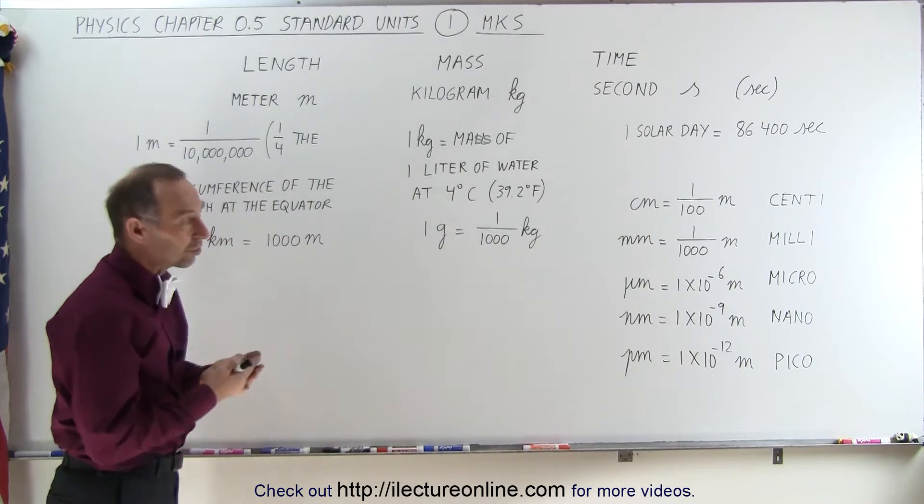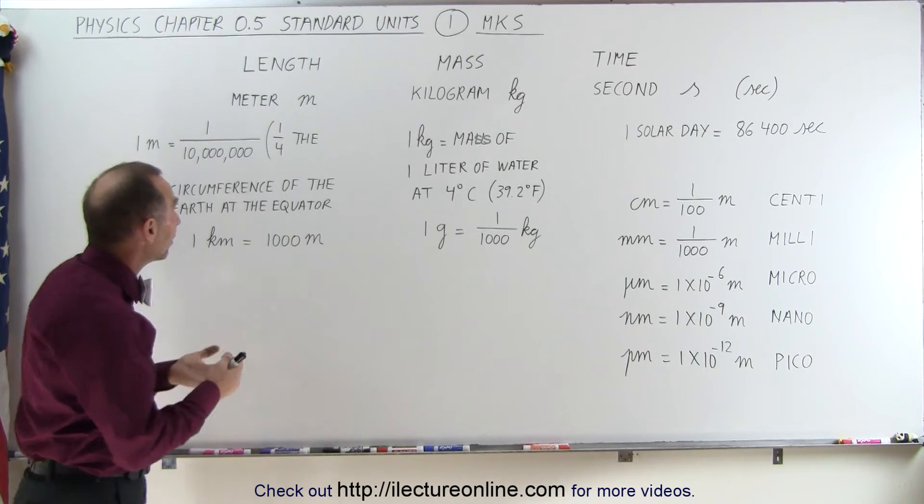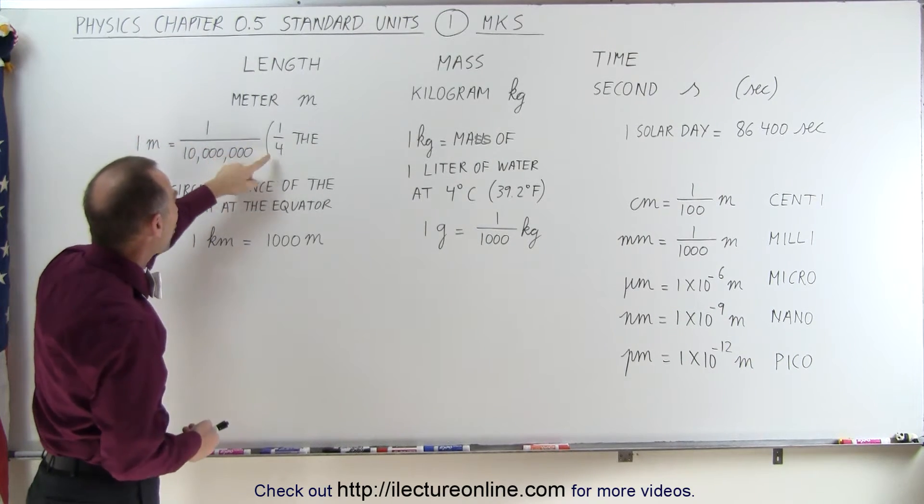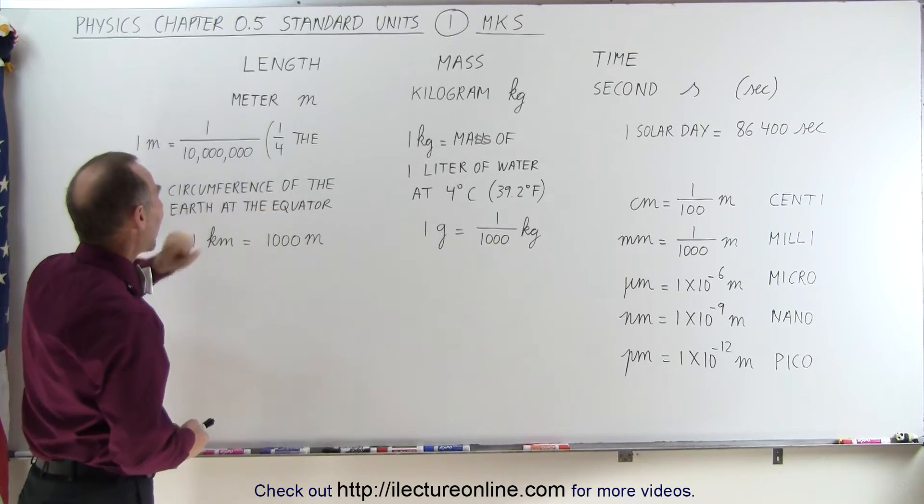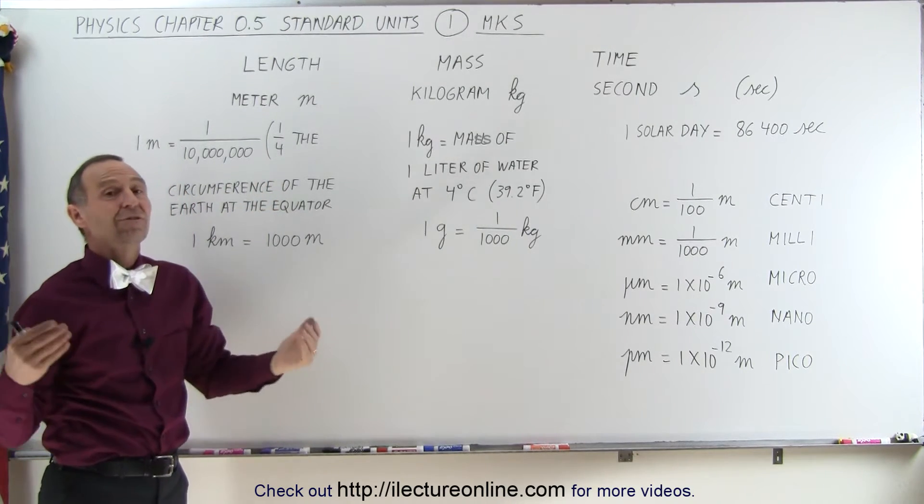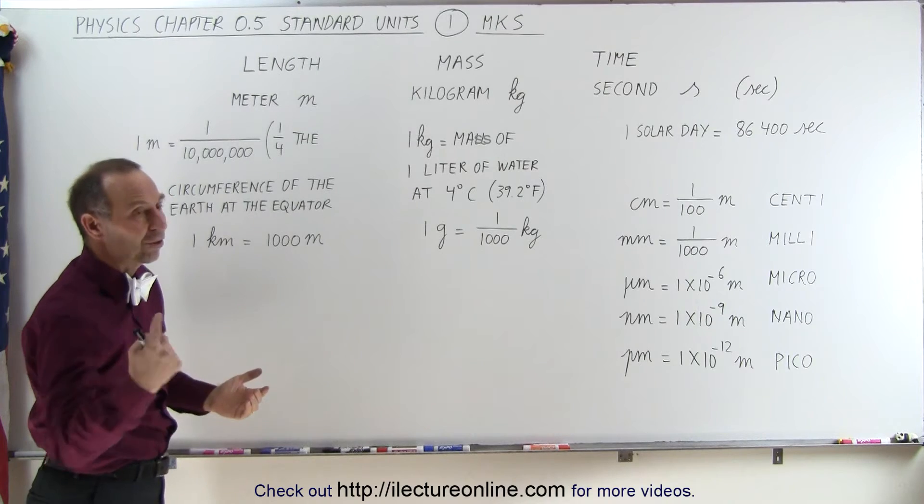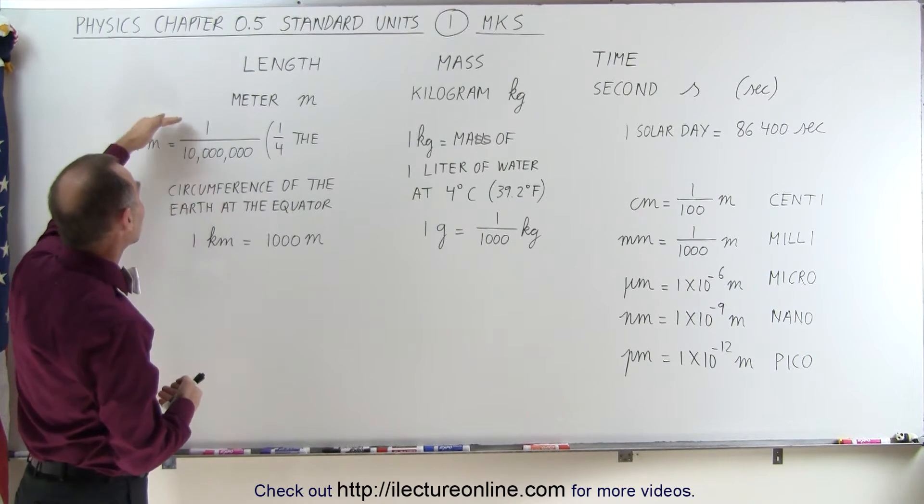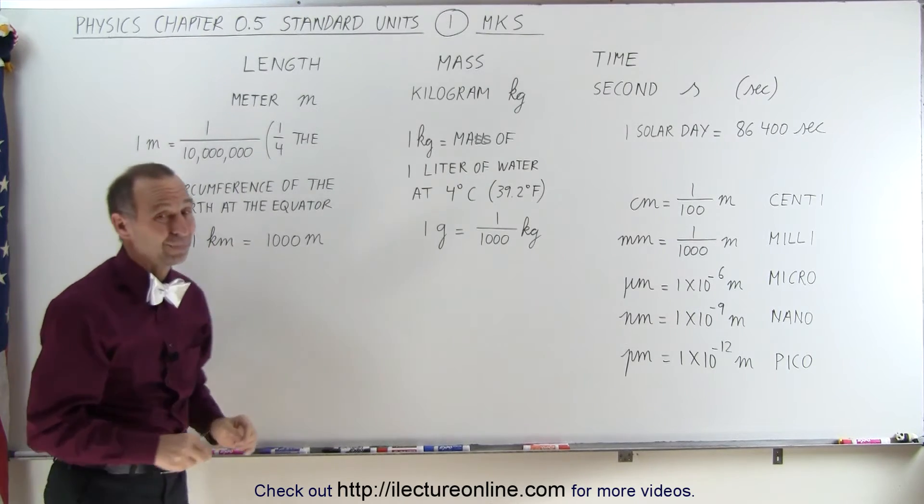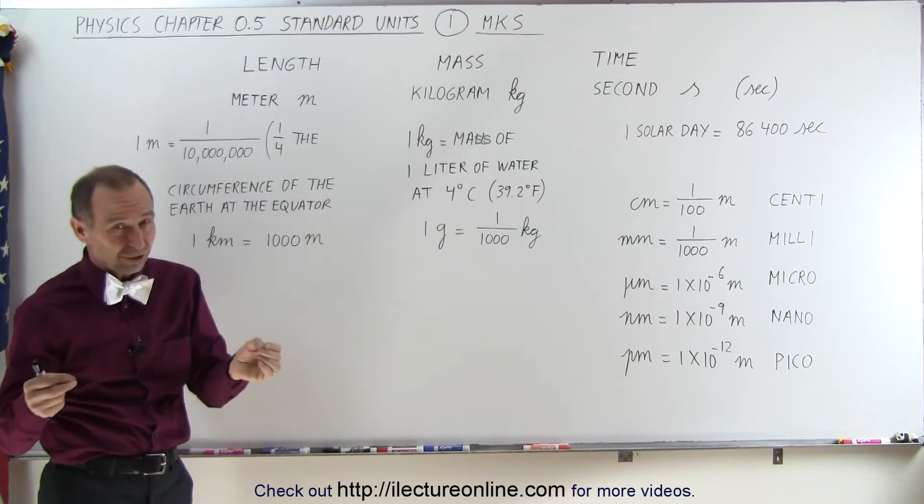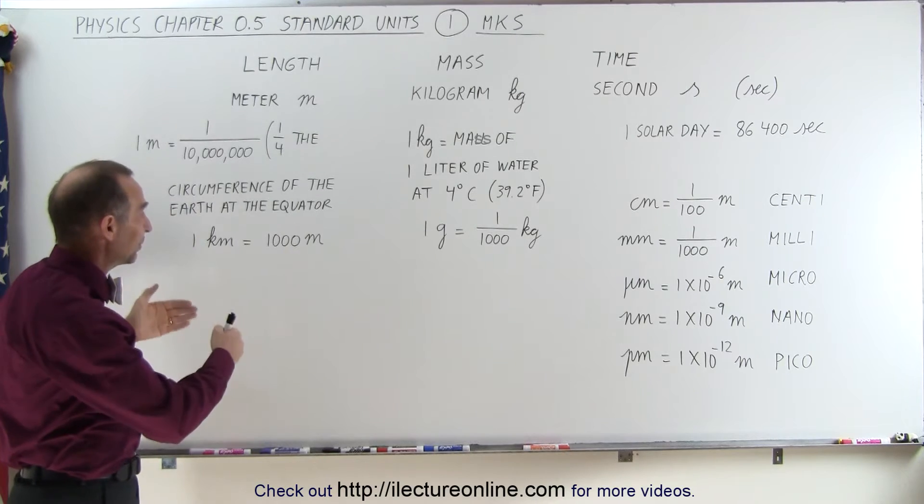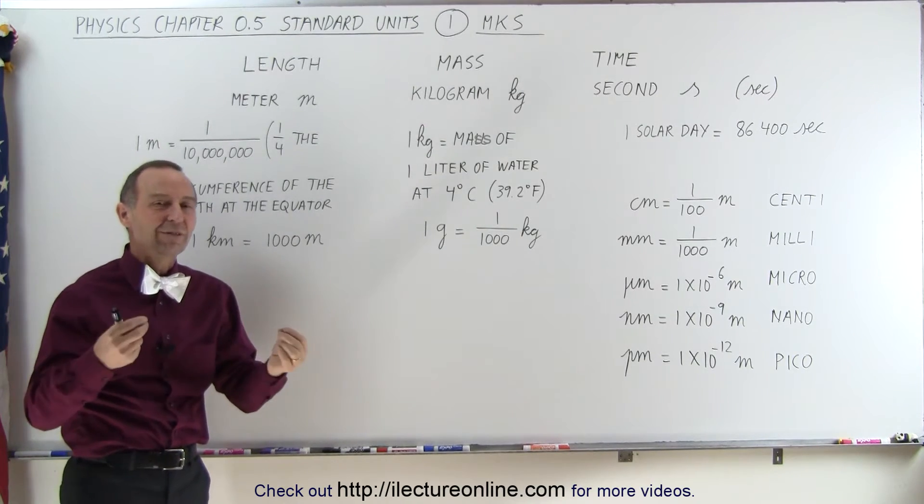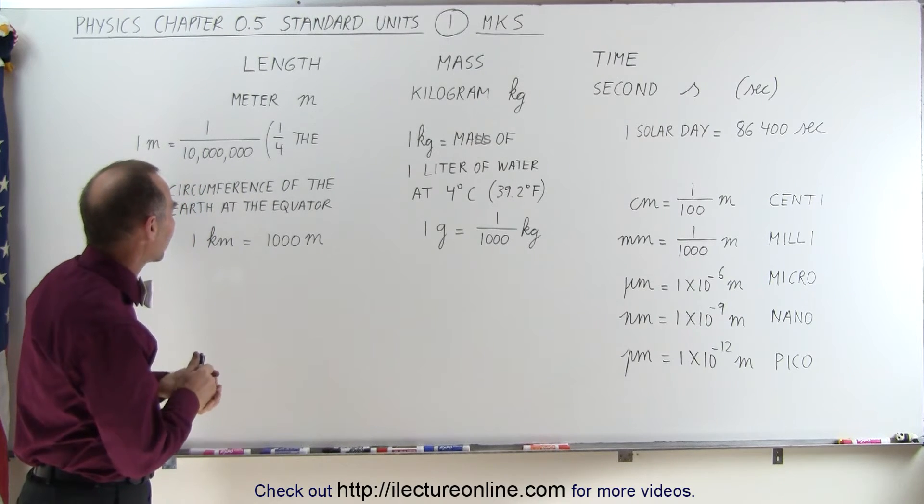Now, where do these units come from? Well, one of the ways in which a meter is defined is defined as one ten millionth, one quarter the circumference of the Earth at the equator. Since the Earth is defined to be 40,000 meters around at the equator, you take one quarter of that, and then one ten millionth of that, and you have exactly one meter. I don't know how they would exactly measure that and come up with an exact meter, but that was the definition. Now, of course, there is a better definition in terms of wavelengths of a particular color light.